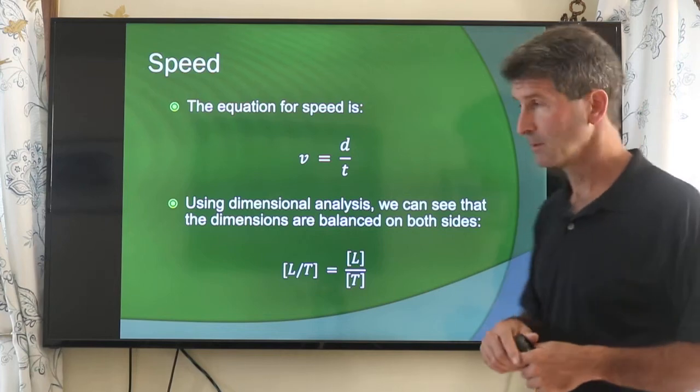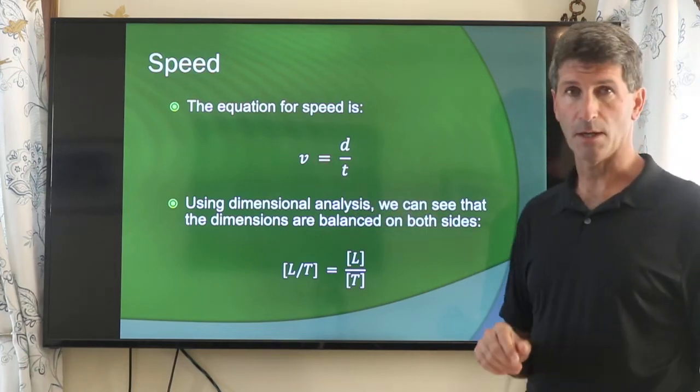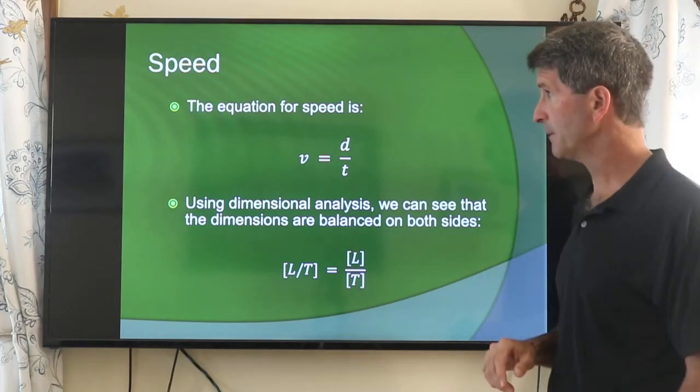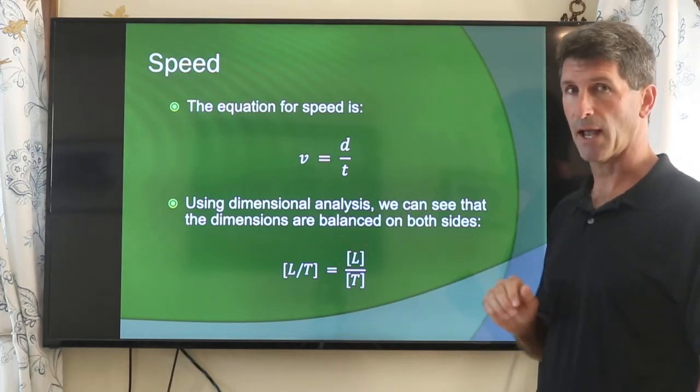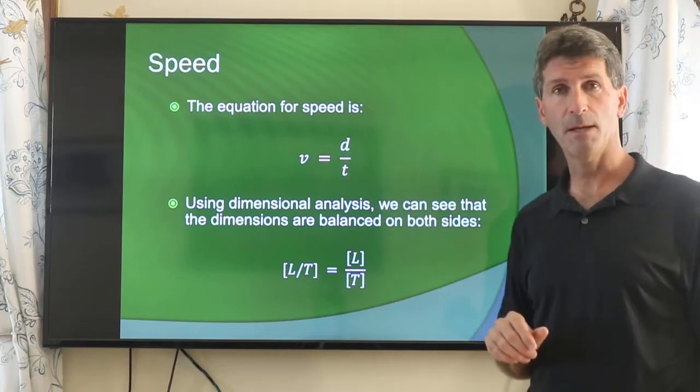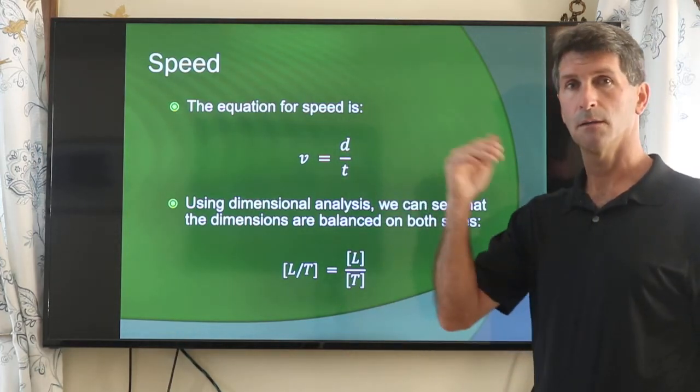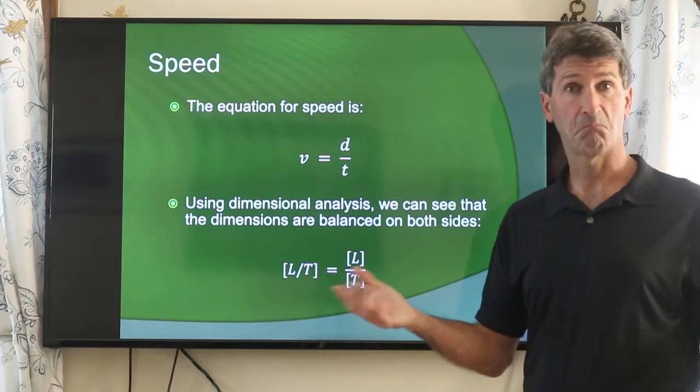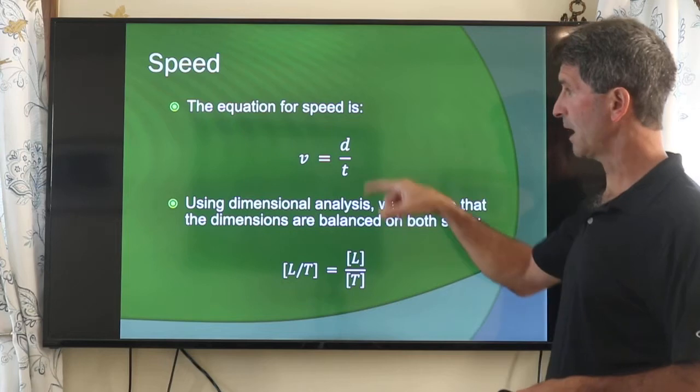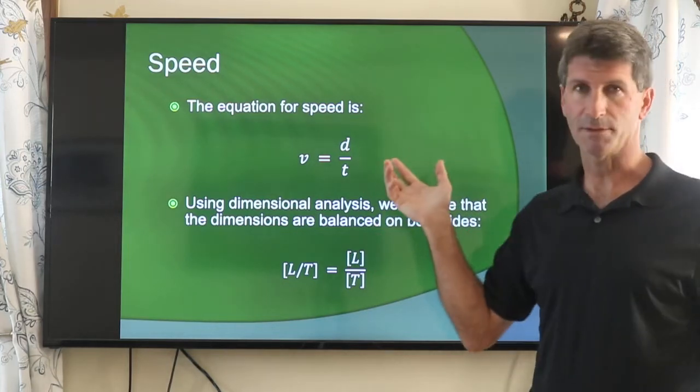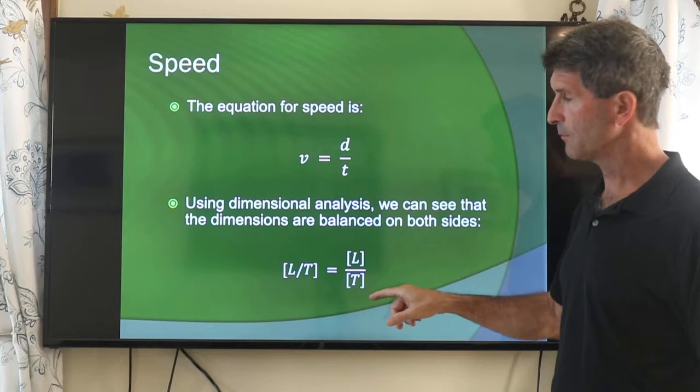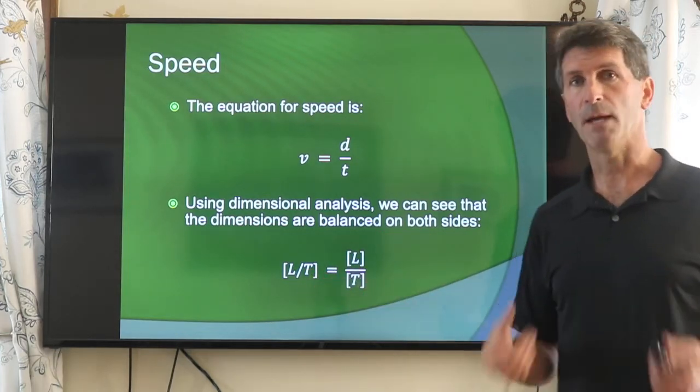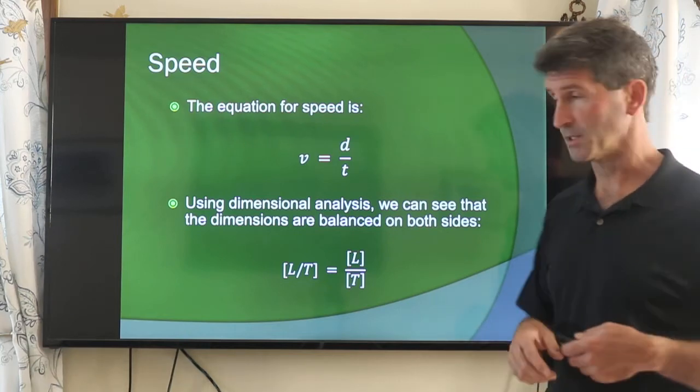Very good example right here. On the left-hand side of the equation we have speed. On the right-hand side we have distance and time. The dimensions on each side have to match. We know that speed is how far per how much time, so it's the length divided by time. On the other side, distance is length, time is time. And we see that matches on the other side. So length divided by time, length divided by time. Make sure that the dimensions match on each side.